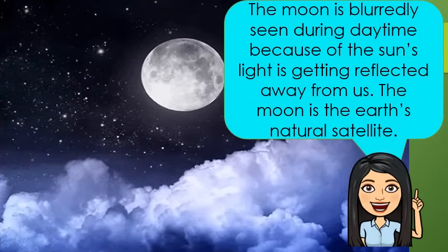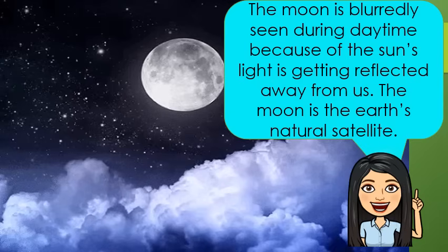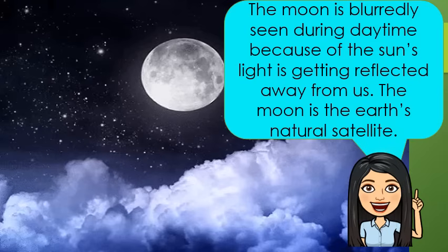The moon is barely seen during daytime because the sun's light is getting reflected away from us. The moon is the Earth's natural satellite. The surface of the moon is full of holes and dark patches. Do you know that the moon is Earth's nearest neighbor? The moon has no soil and water. It is round like Earth.